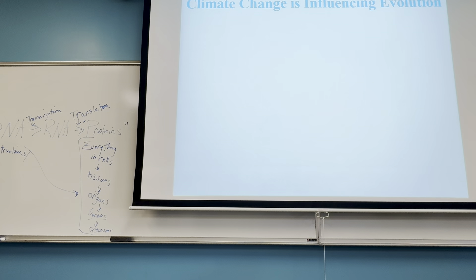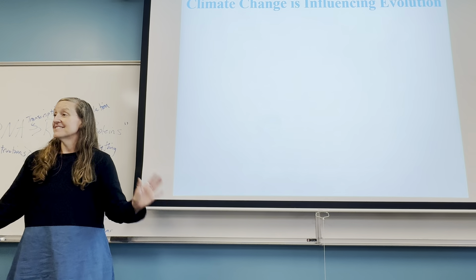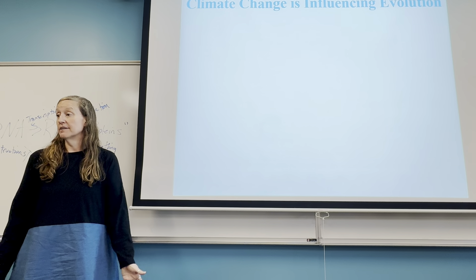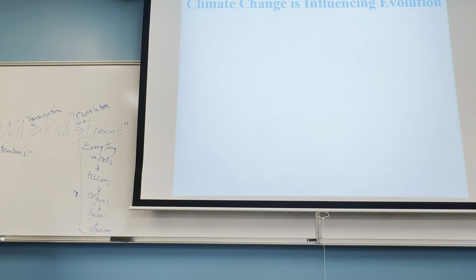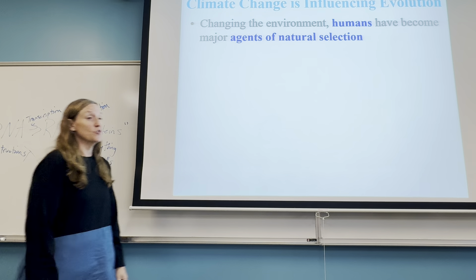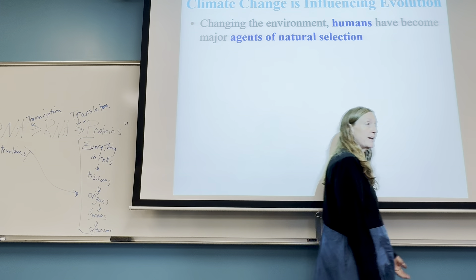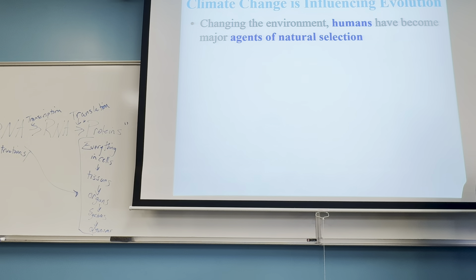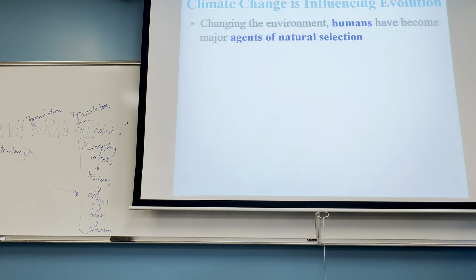This brings us to climate change in the perspective of natural selection. Climate change has always influenced evolution — it has always been a driving factor. Think about climate change as natural selection. Humans are currently accelerating climate change, making us the driving force and therefore agents of natural selection. The evidence shows that humans as agents of natural selection are affecting every species on Earth negatively.